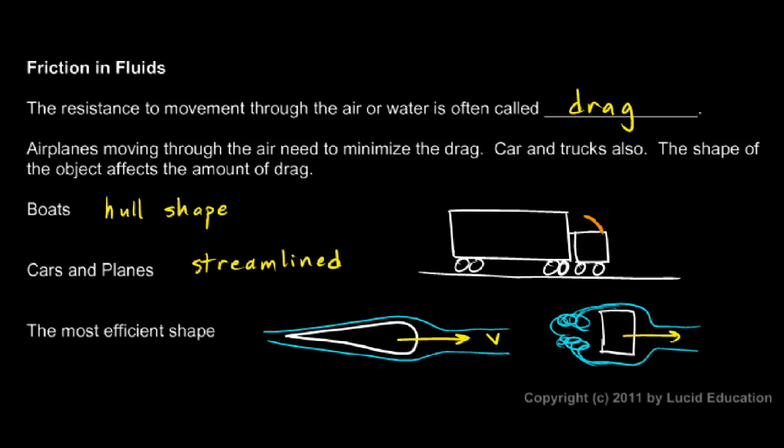And interestingly, this efficient shape that we've talked about, this is the shape that a raindrop will take as it falls through the air. If you think of a raindrop falling, you know what they look like. Raindrops typically have that shape to them, something like this. And that's because the raindrops are liquid. They can change shape easily. And they naturally take this shape with the rounded front and the tapered back end.